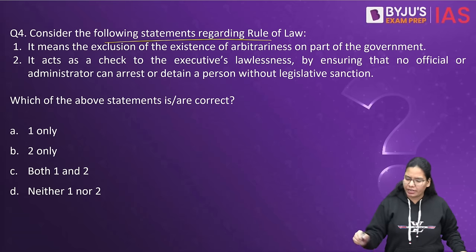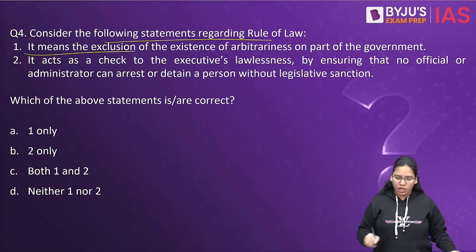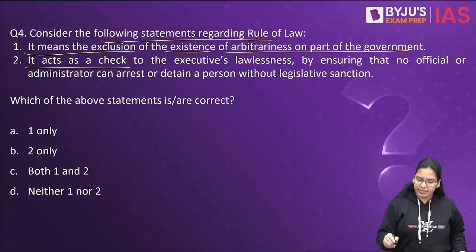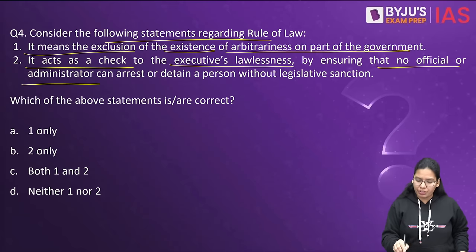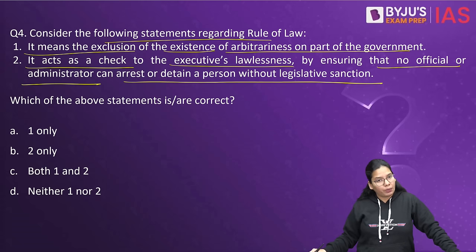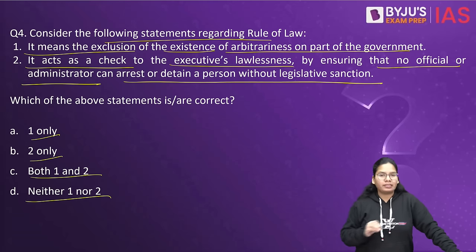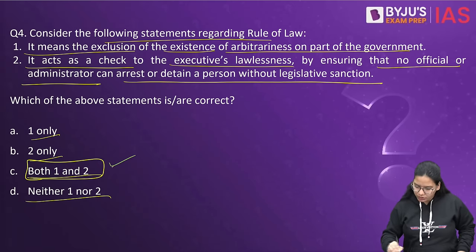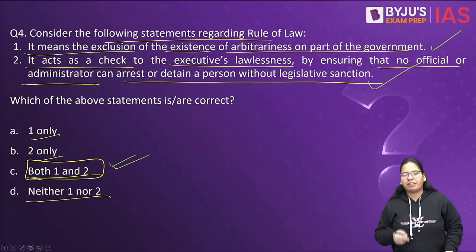Consider the following statements regarding rule of law. First statement: it means the exclusion of the existence of arbitrariness on the part of the government. Second statement: it acts as a check to executive lawlessness by ensuring that no official or administrator can arrest or detain a person without legislative sanction. Both of these are correct, so the answer is both one and two.